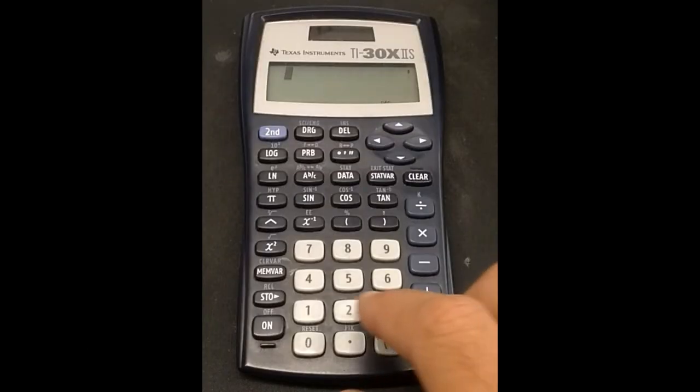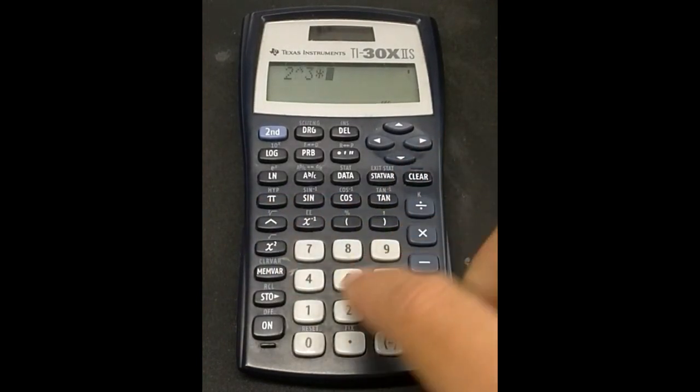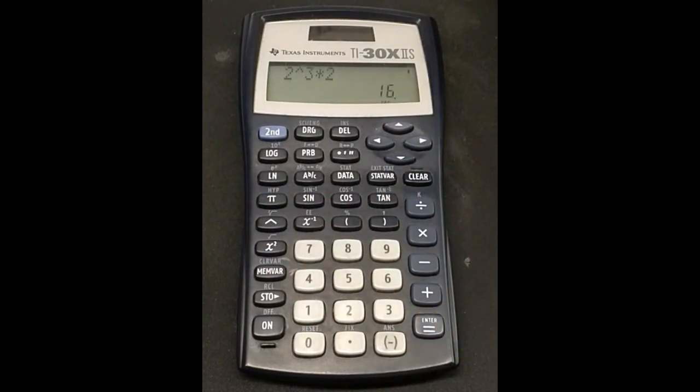Don't forget, you may need to use parentheses with your exponent in some problems. For example, find 2 raised to the 3 times 2 power. By hand, we calculate the exponent to be 3 times 2, or 6, and 2 raised to the sixth power is 64. What does the calculator say when we put that in? 2 raised to the 3 times 2 equals 16.